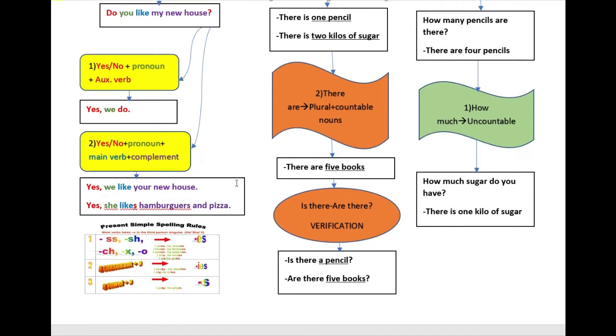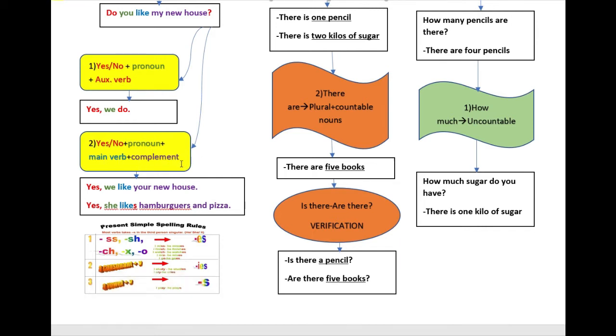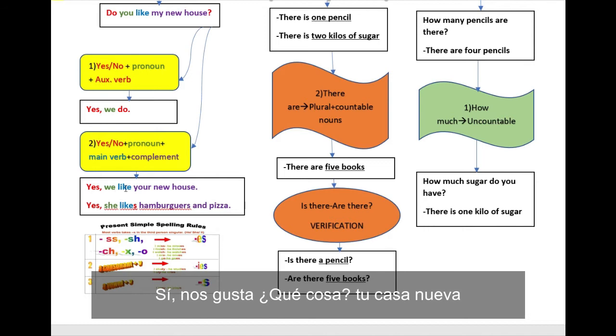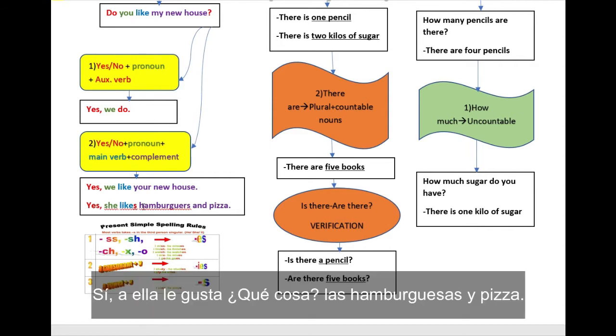The long answer. Yes, no, pronoun, main verb, and the complement. Yes, we like, we like what? Your new house. Oh, yes, she likes. She likes what? Hamburgers and pizza.